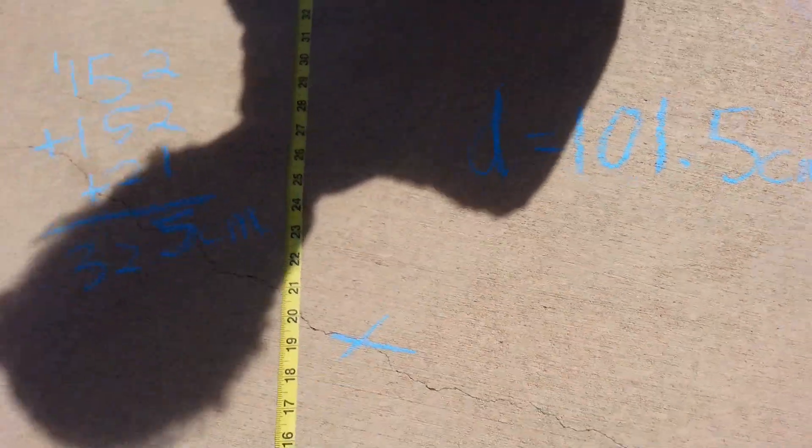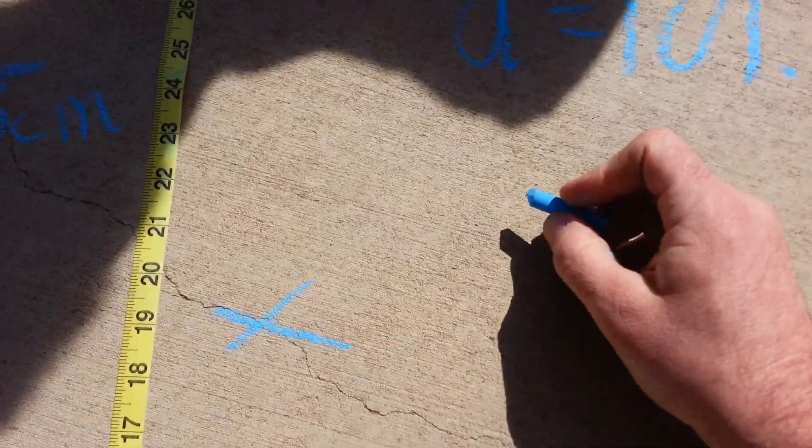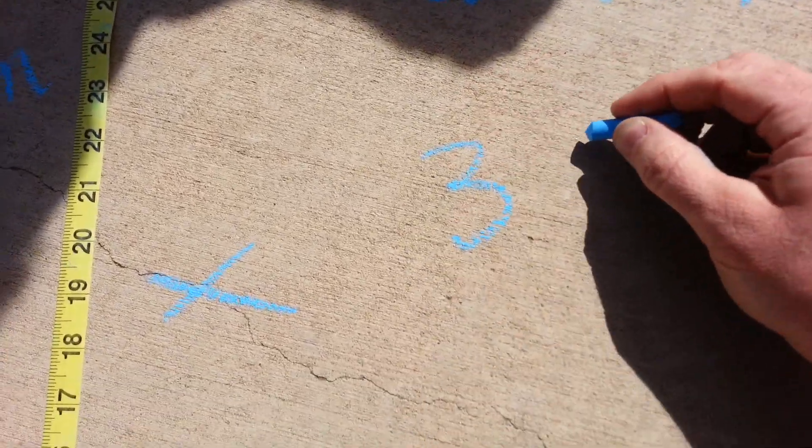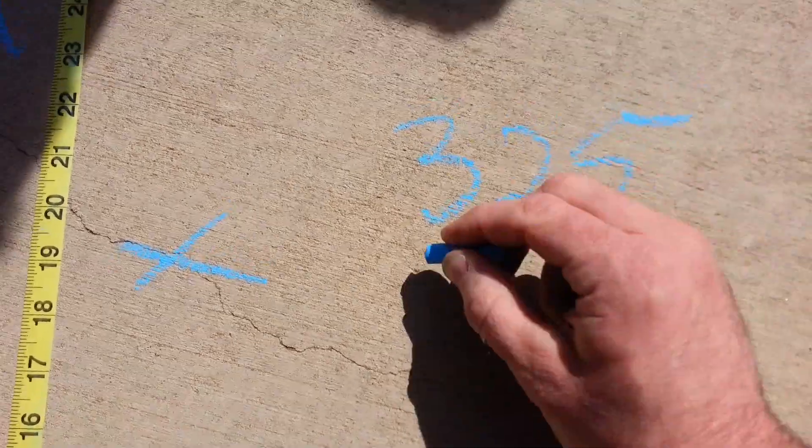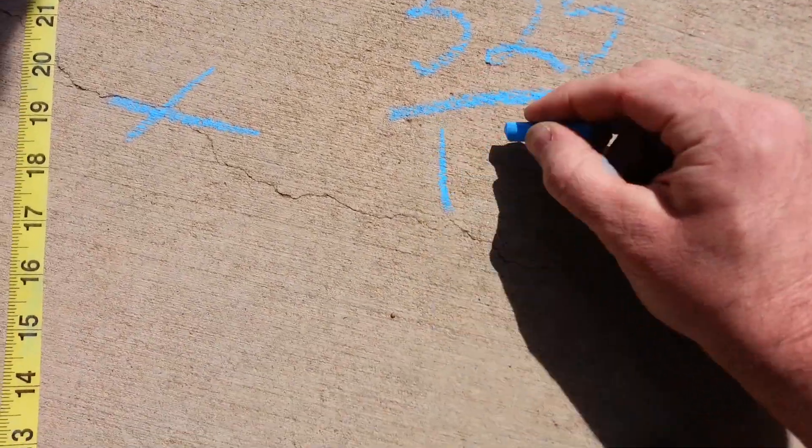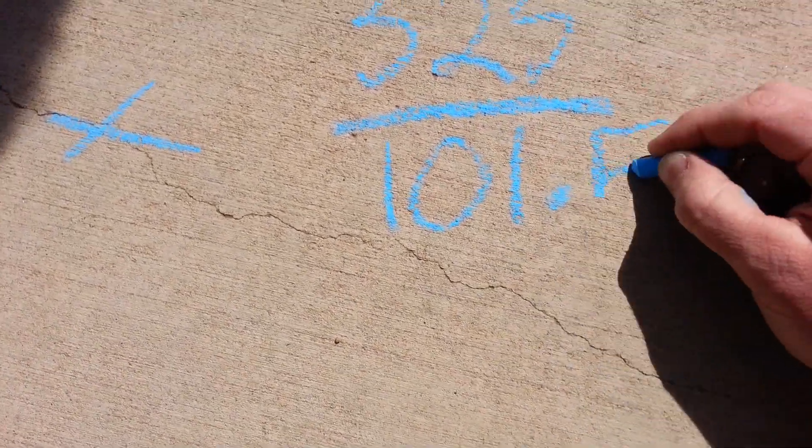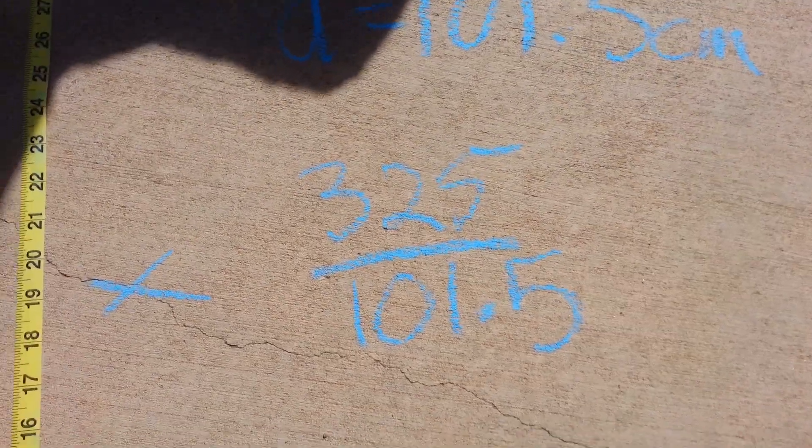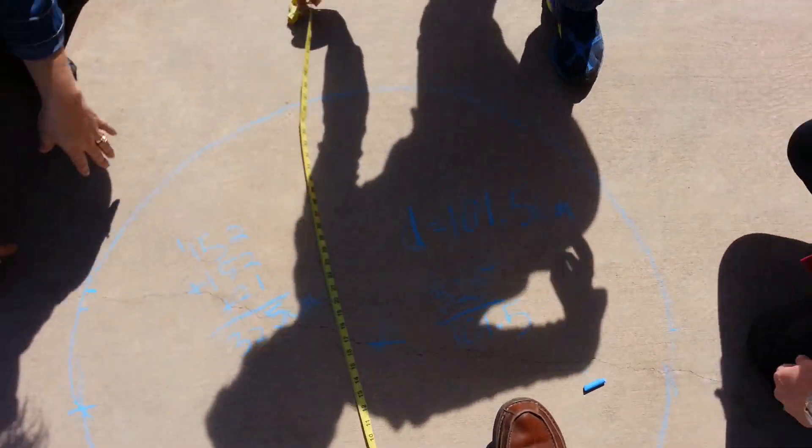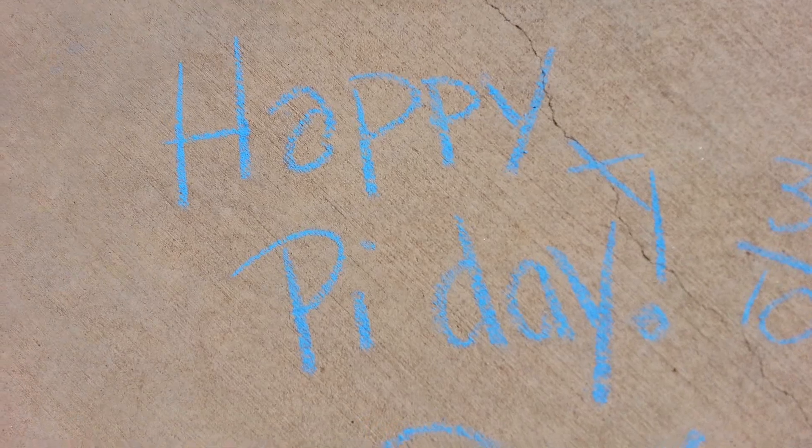So we measured around the outside was 325, across it through the middle is 101.5. We're going to take the length on the outside, 325, divide it by the across the middle of it, 101.5. You're going to write these dimensions on your paper and that's what we want. Happy Pi Day!